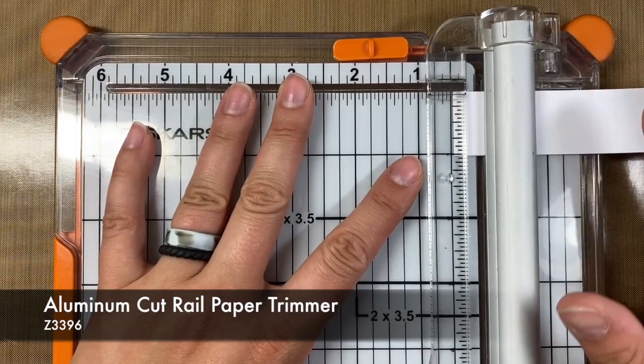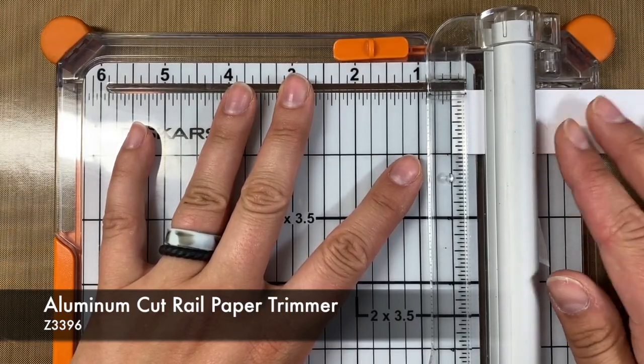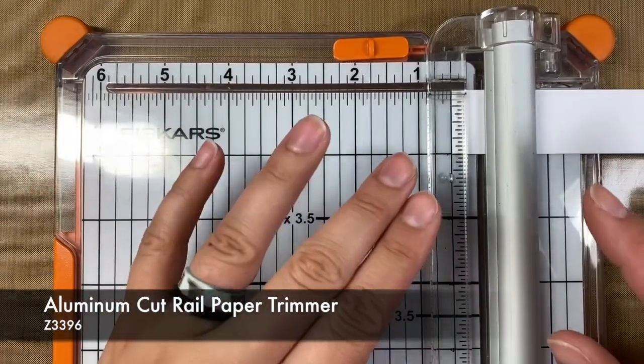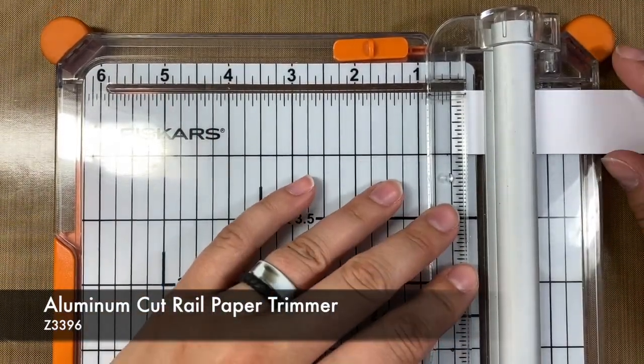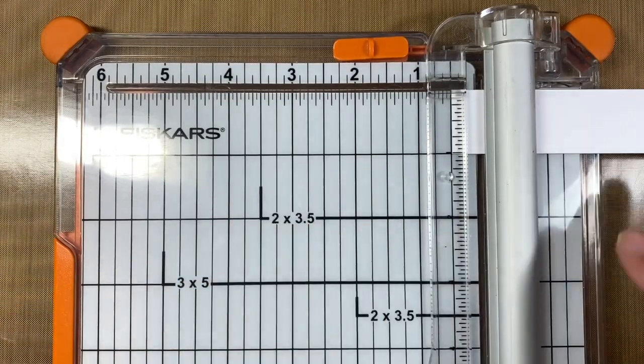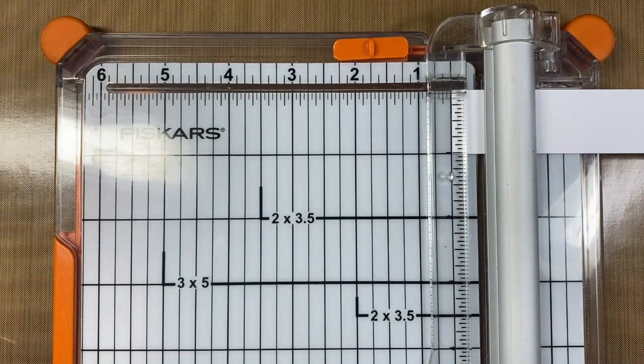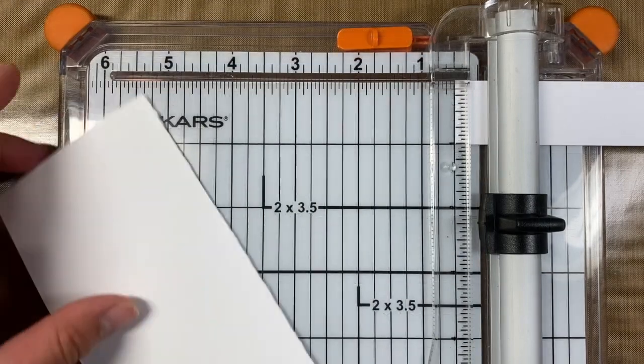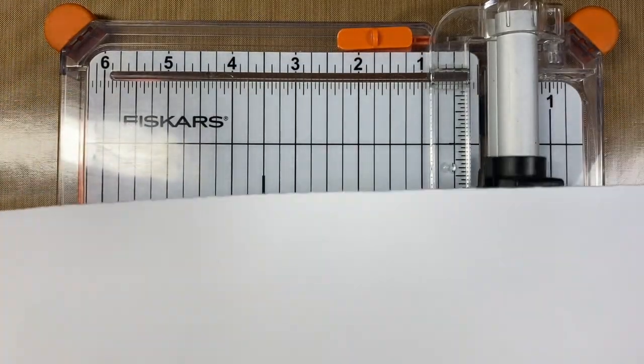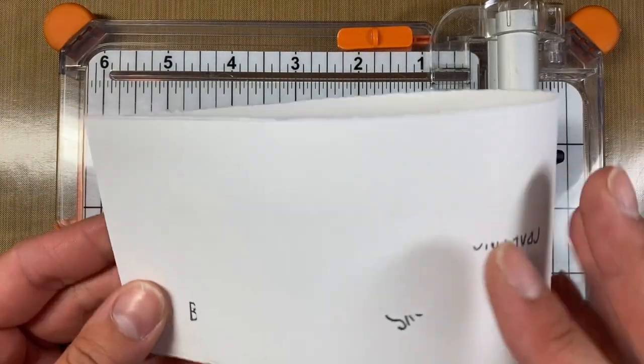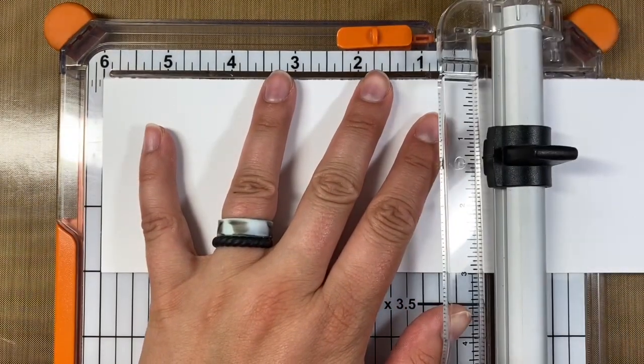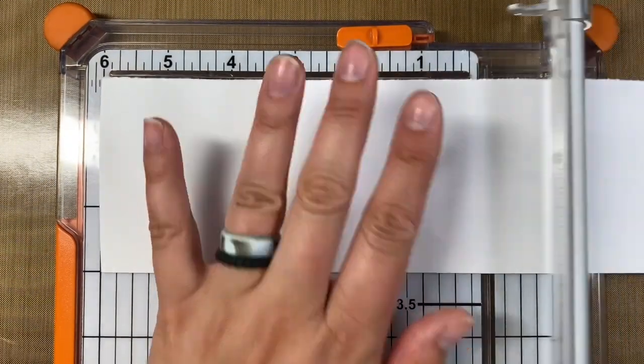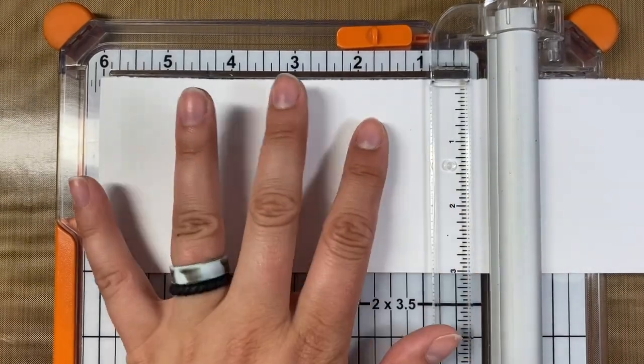But to start off I just wanted to tell you a little bit about scoring on this Fiskars rail cut blade especially. This one we have found that if you are scoring you have to be a little bit off. It might sound weird but it's true. So let me show you an example. Let me get a scrap piece of paper here.